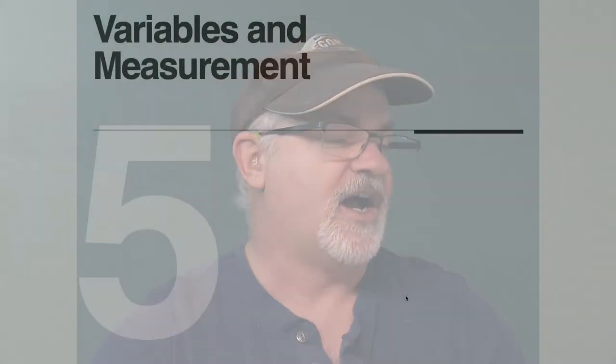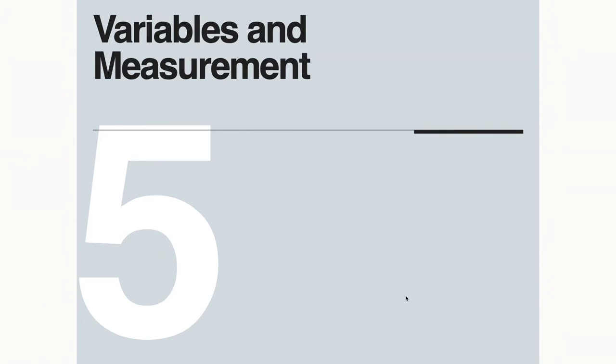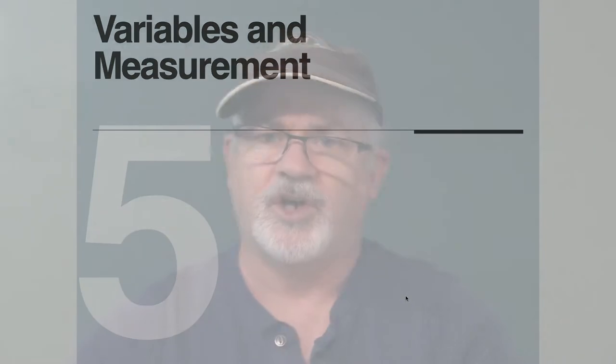We have a chapter four lab, quiz, discussion, and lab, and then we move into chapter five: variables and measurement. Variables are factors we're looking for relationships between. For example, does wealth predict how well a marriage goes? We're measuring two variables — how are we going to define wealth and how are we going to define happiness in a marriage? That's identifying the variables — wealth and marital satisfaction — and then operationally defining them: we need numbers to measure those things.